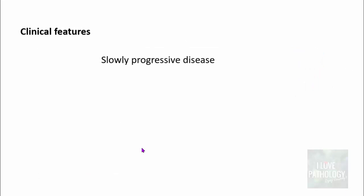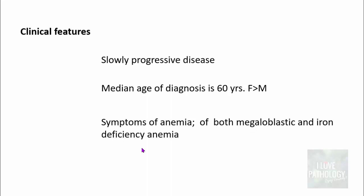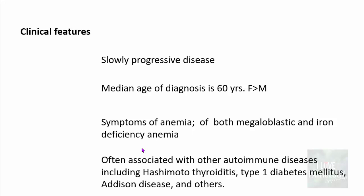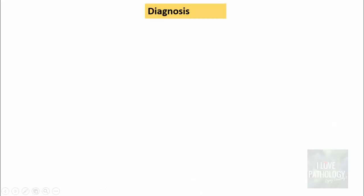Now, what are the clinical features? This is a very slowly progressive disease. The median age of diagnosis is around 60 years; females are more commonly affected than males. Patients usually present with symptoms of anemia — particularly megaloblastic anemia due to vitamin B12 deficiency — and also iron deficiency anemia. This disease is often associated with other autoimmune conditions such as Hashimoto's thyroiditis, type 1 diabetes mellitus, Addison's disease, and others.